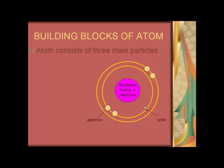Building blocks of an atom: Atoms consist of three main particles - proton, neutron and electron. The structure of the atom is shown in a simplified diagram right here. This diagram is very similar to our solar system.